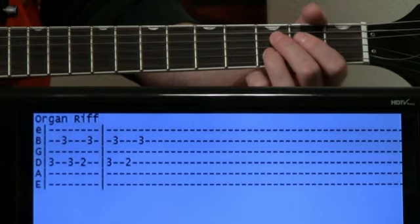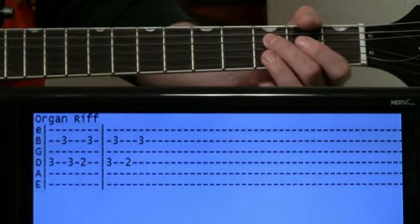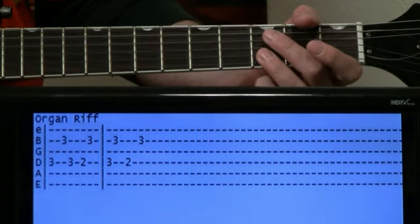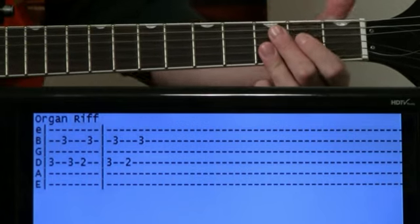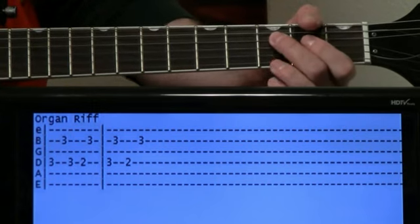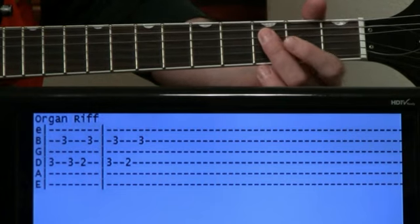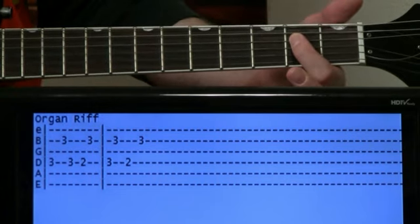Then we're just gonna go to three on the B just real quick. These are some offbeat funky notes, but they're fun to play once you get them down. So we've got three D, three B, and then we do a quick three D back to two on the D.